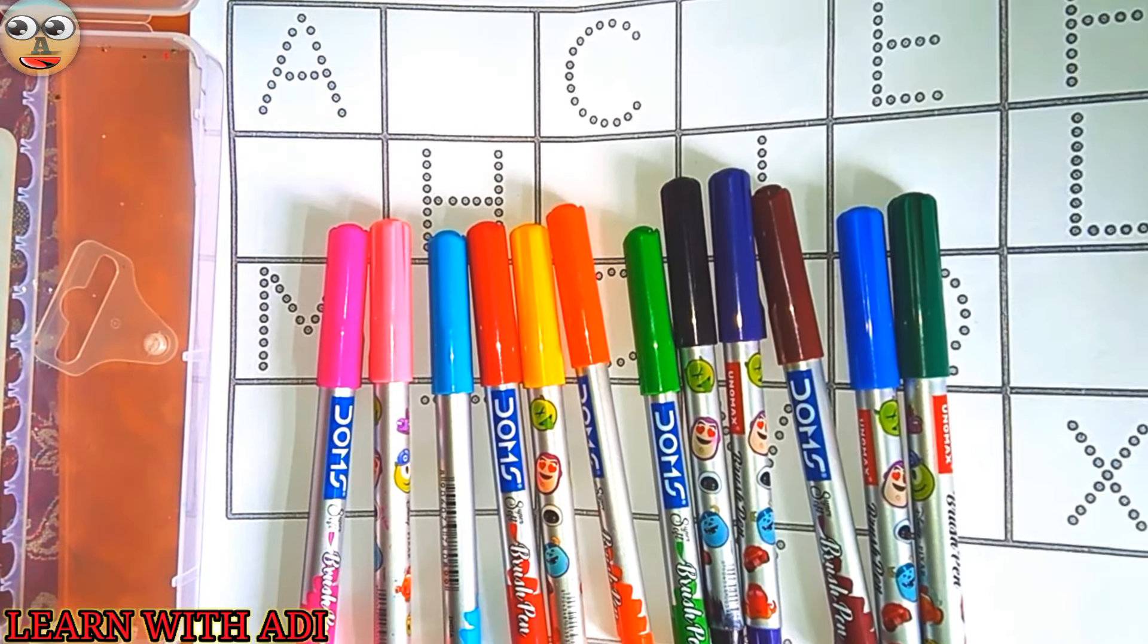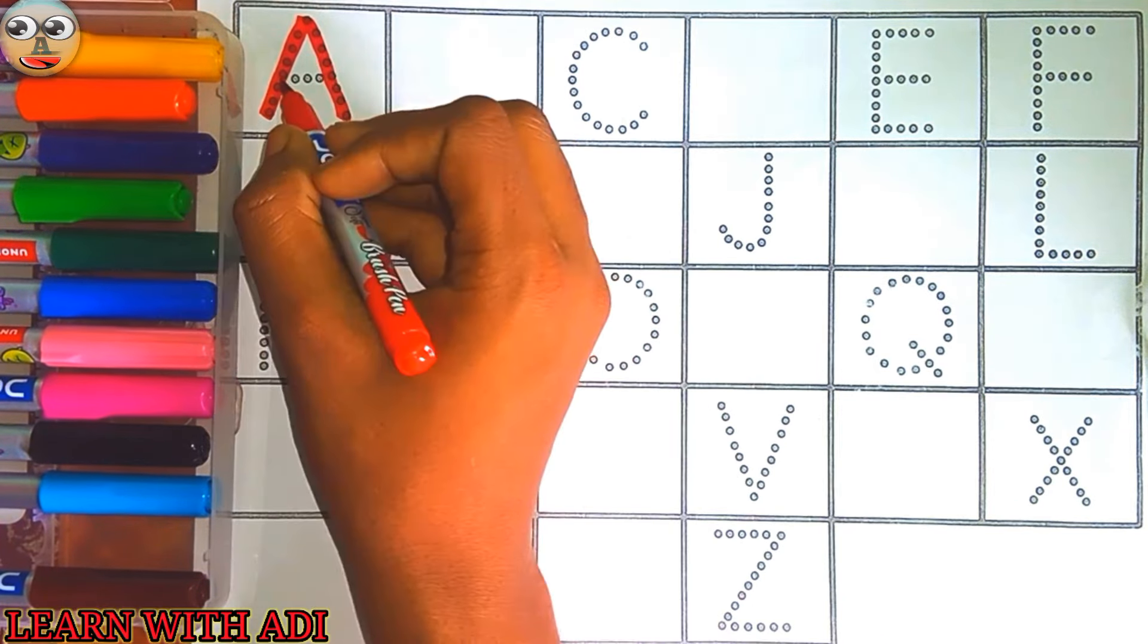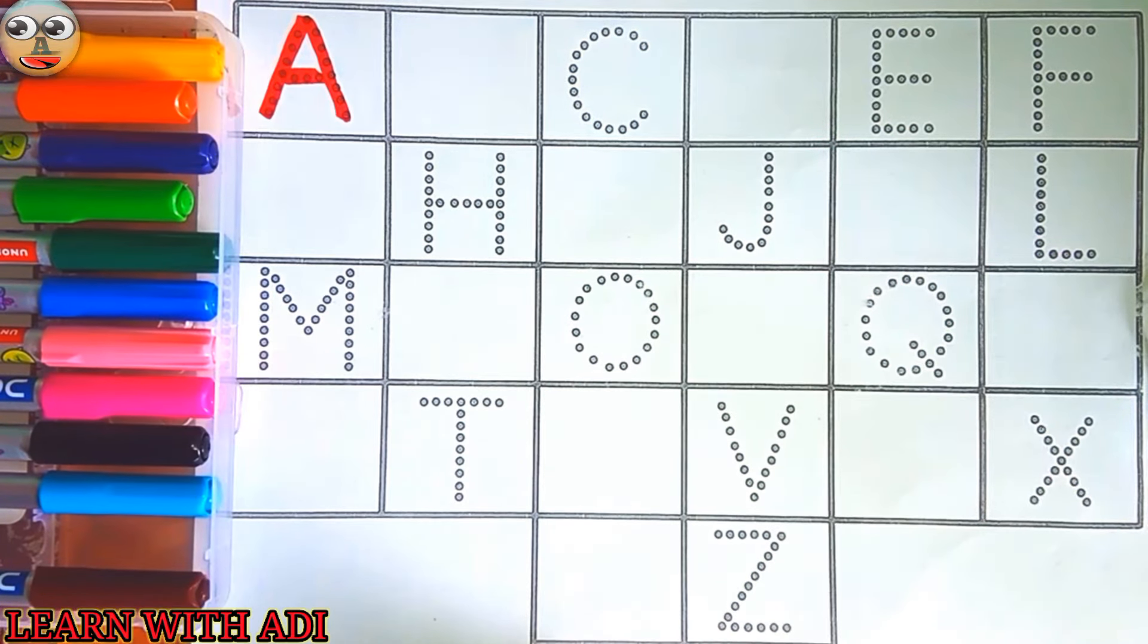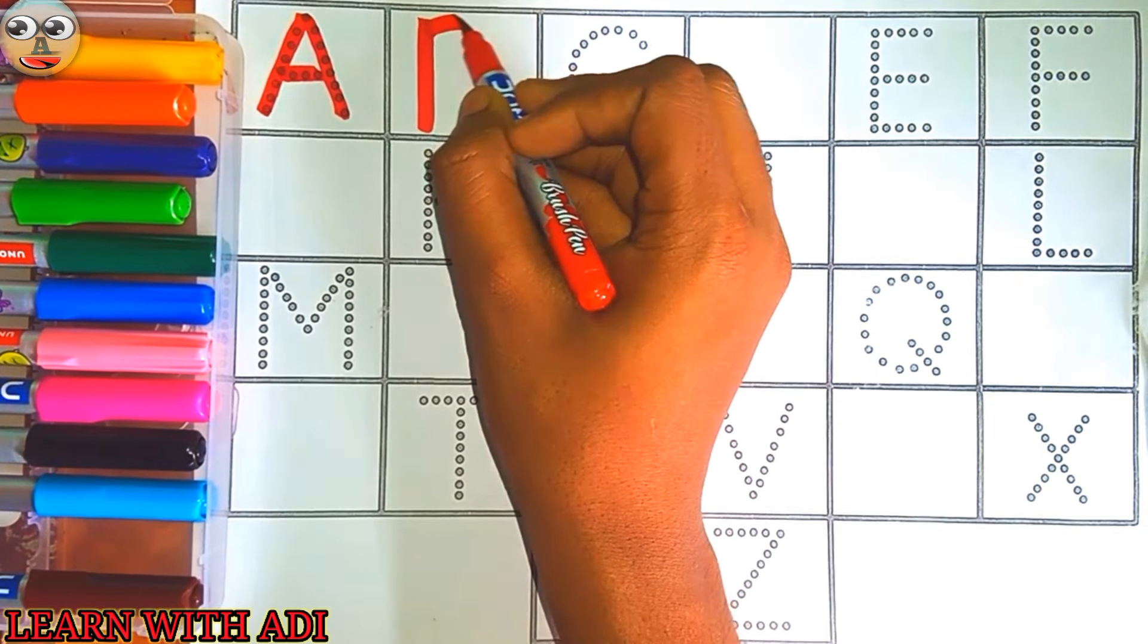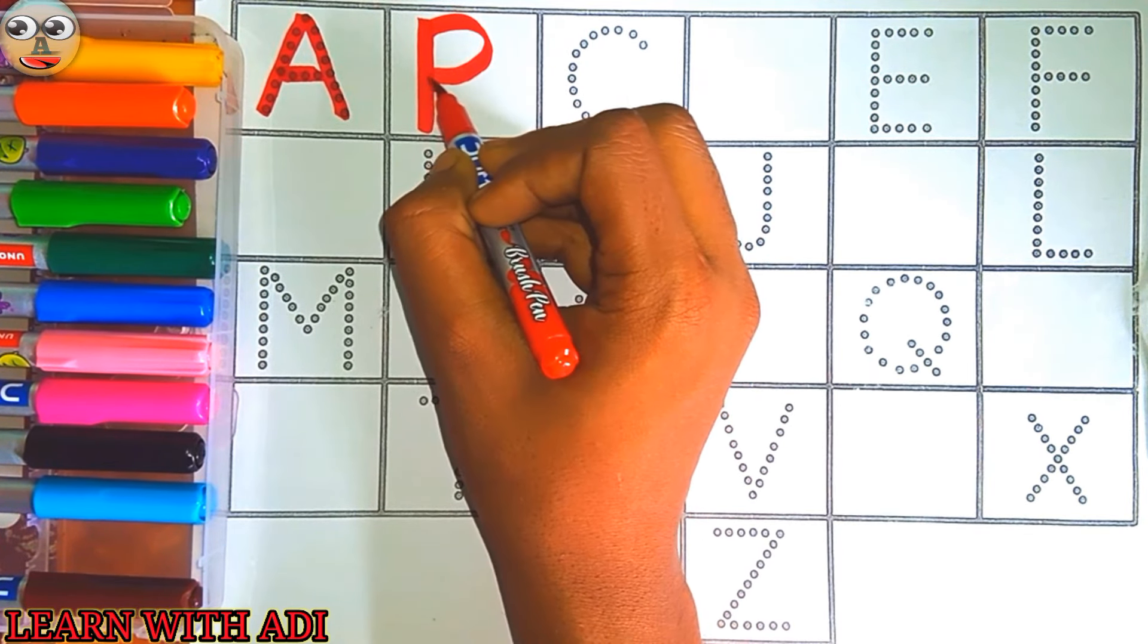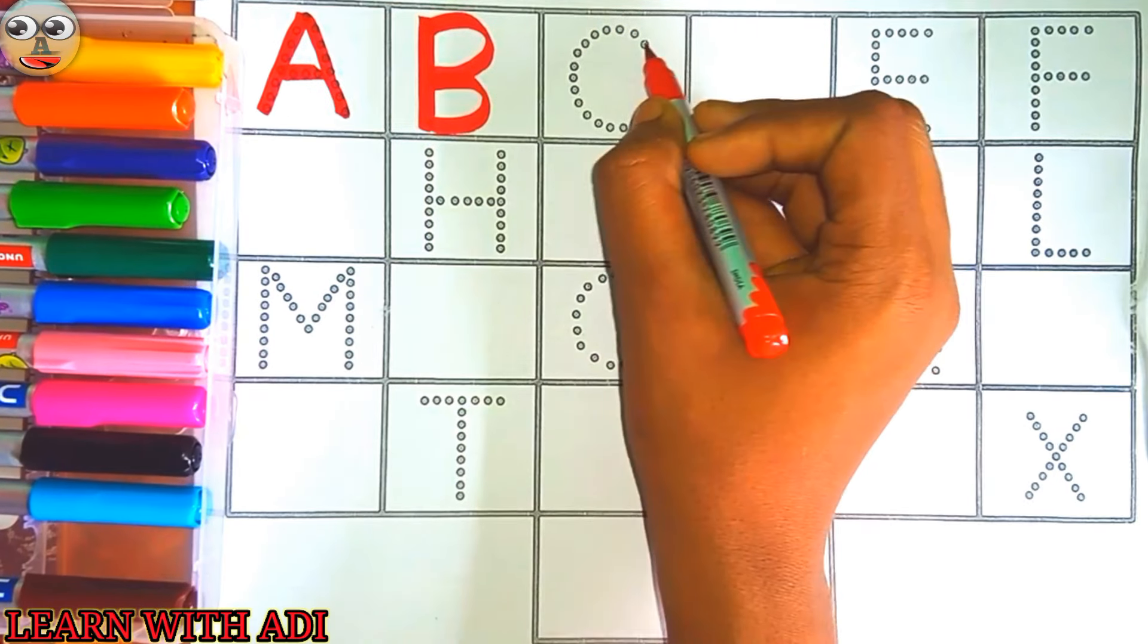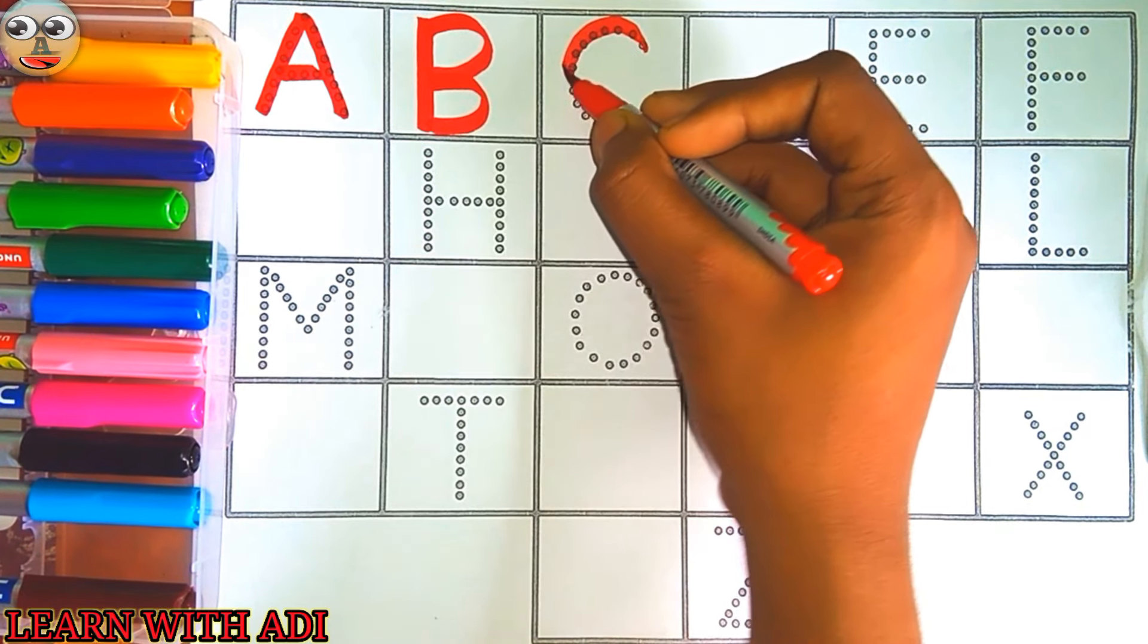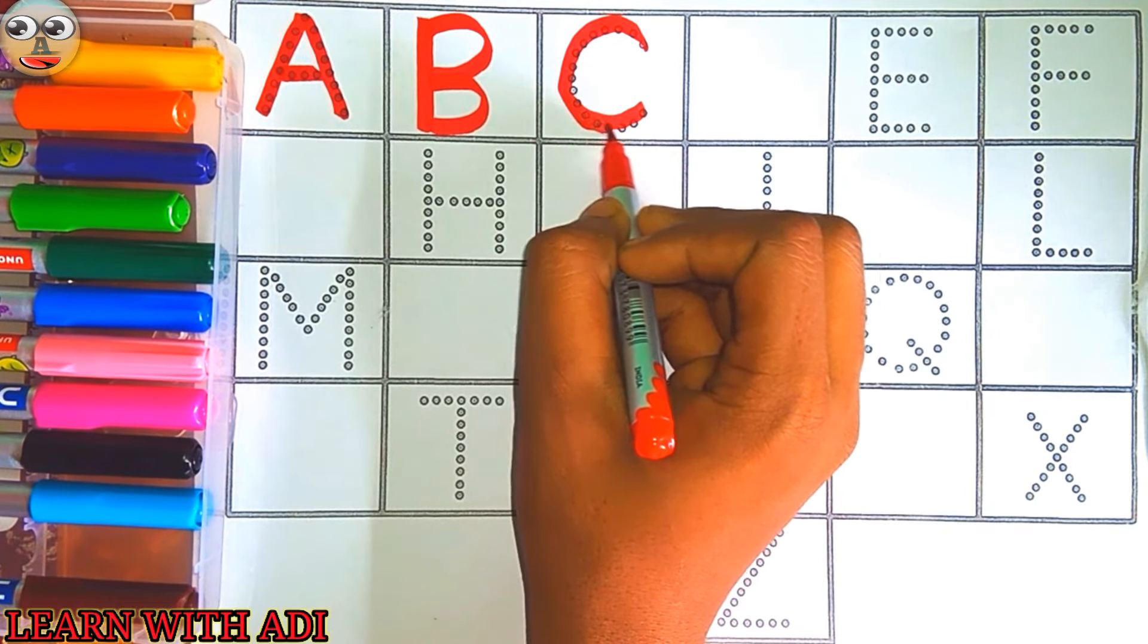Let's start the class. A for apple, A for ant, B for ball, B for bat, C for car.